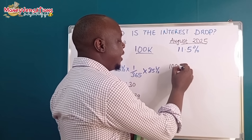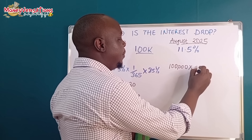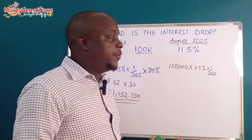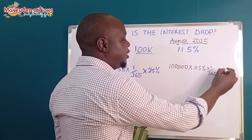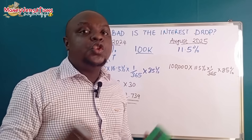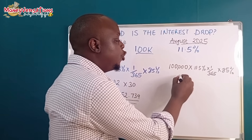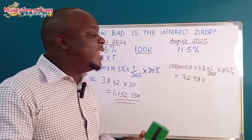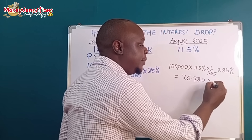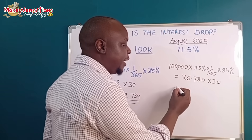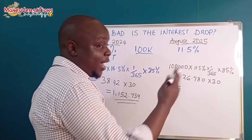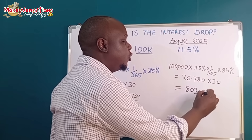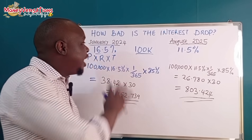Now let us change the figures. Using the same 100,000 shillings, we multiply by the current rate of 11.5 percent, then multiply by 1/365 to get the daily rate, and then multiply by 85 percent to get the net daily return after withholding tax. When I punch this into the calculator, I get 26.780 as the daily net yield after tax. Multiplying by 30 days gives a monthly average of 803.424.